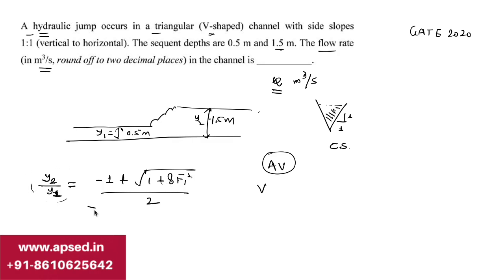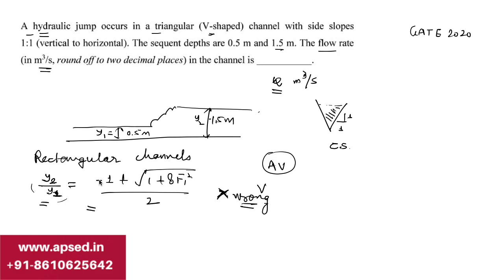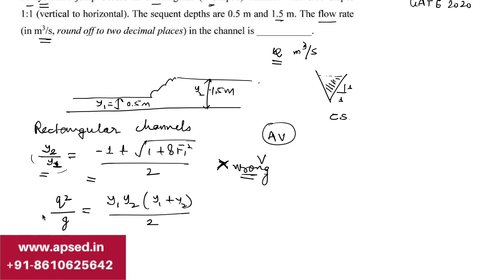But if you do that, the solution you obtain will be wrong. The reason is that this formula is only applicable to rectangular channels. Similarly, another formula some of you might remember is q²/g = y₁y₂(y₁ + y₂)/2. This could be used here, but again you will get the wrong answer, because both of these formulae are only applicable to rectangular channels.